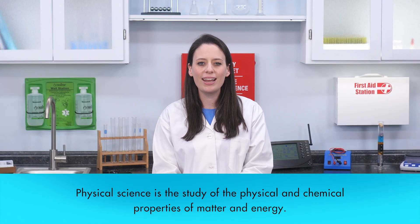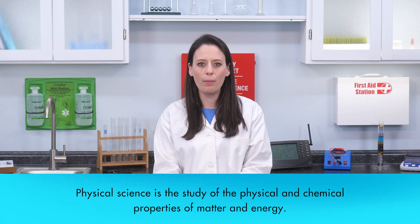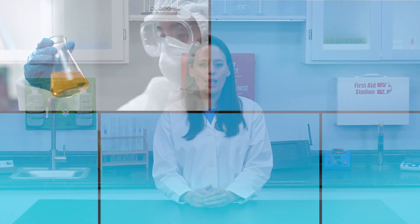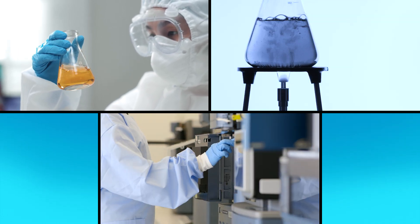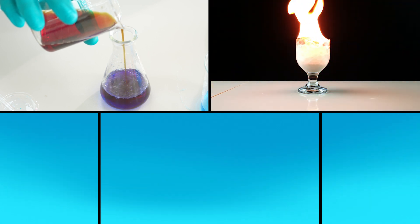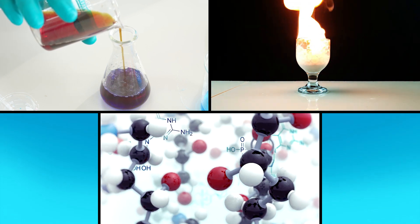Physical science is the study of the physical and chemical properties of matter and energy. Some of the physical properties of matter include mass, volume, density, solubility, melting and boiling points, and physical composition. Chemical properties include chemical stability, reactivity, combustibility, and molecular composition.